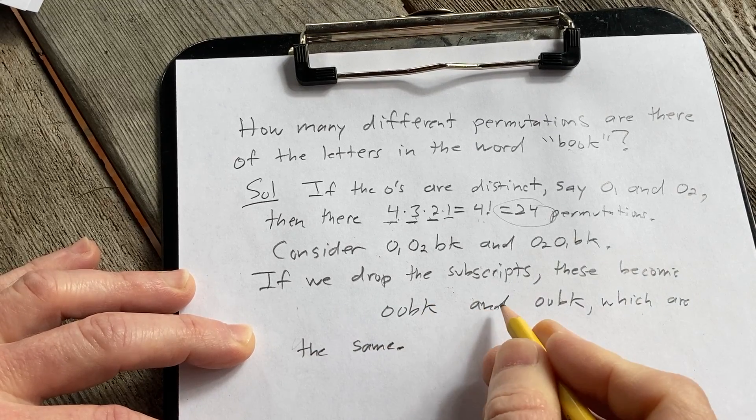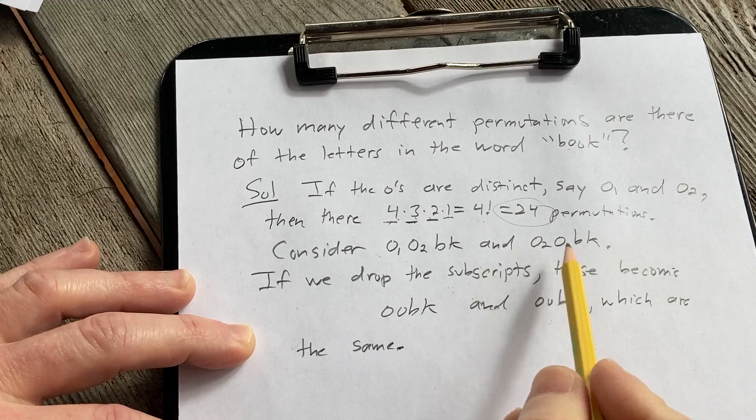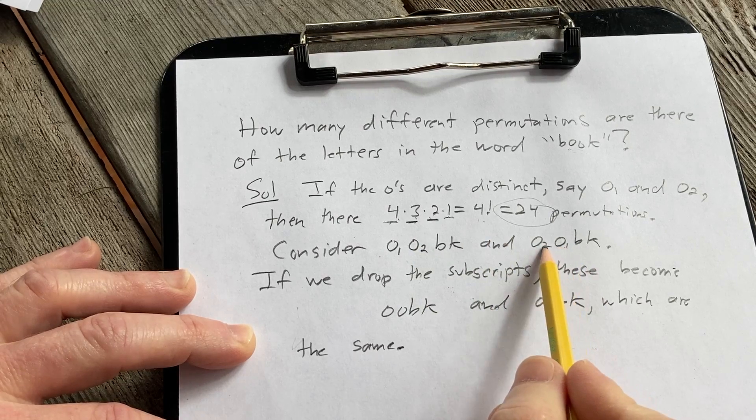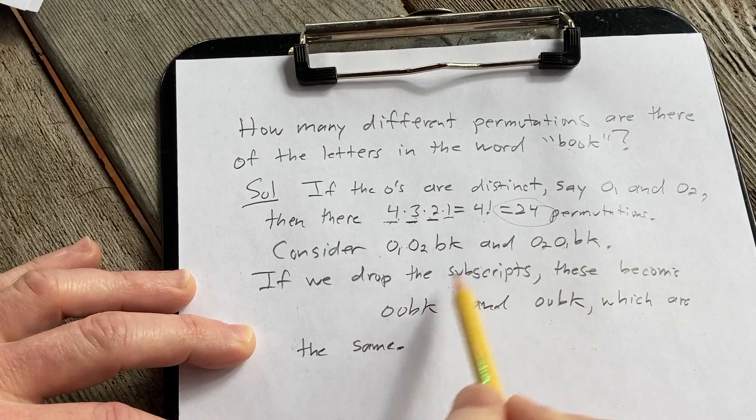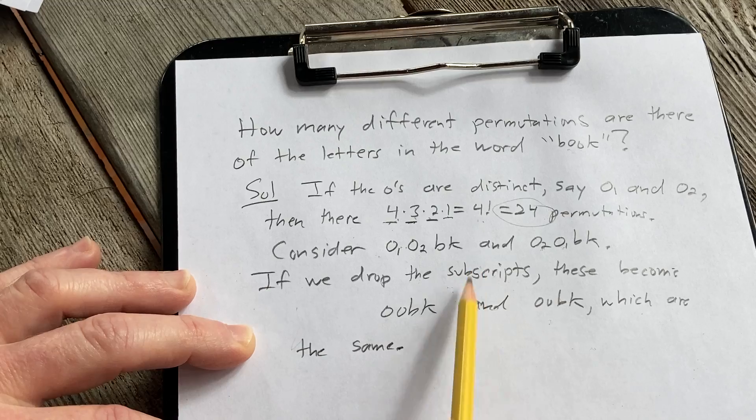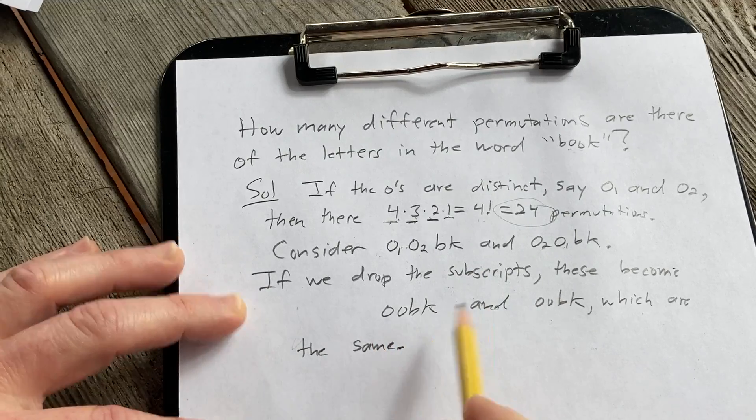So basically we have extra permutations. Because in reality, we don't really have O1 and O2. These are actually the same permutation because O is O. It's not really O1 or O2.